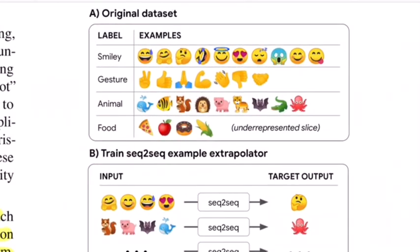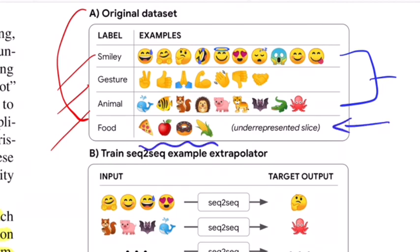If we see this example, let's consider this to be our original dataset. We have four classes: smiley, gesture, animal, and food. For these three classes, we have enough samples, but this is our underrepresented slice because we have very few samples comparatively.